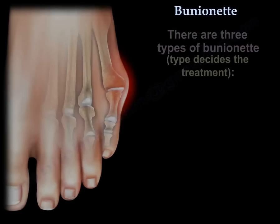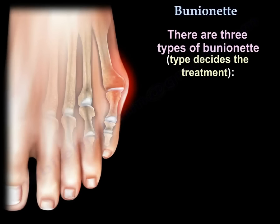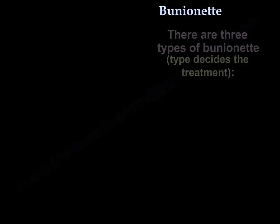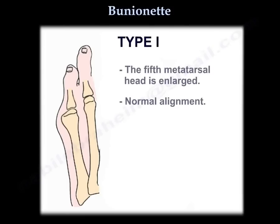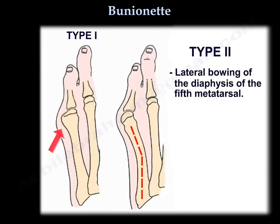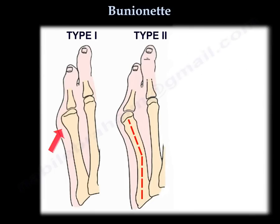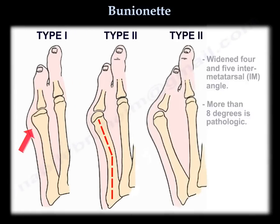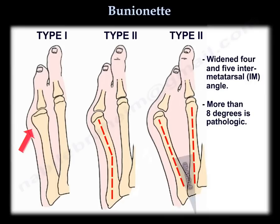There are three types, and the type decides the treatment. Type 1: the 5th metatarsal head is enlarged with normal alignment. Type 2: lateral bowing of the diaphysis of the 5th metatarsal. Type 3: widened 4 and 5 intermetatarsal angle — more than 8 degrees is considered pathologic.